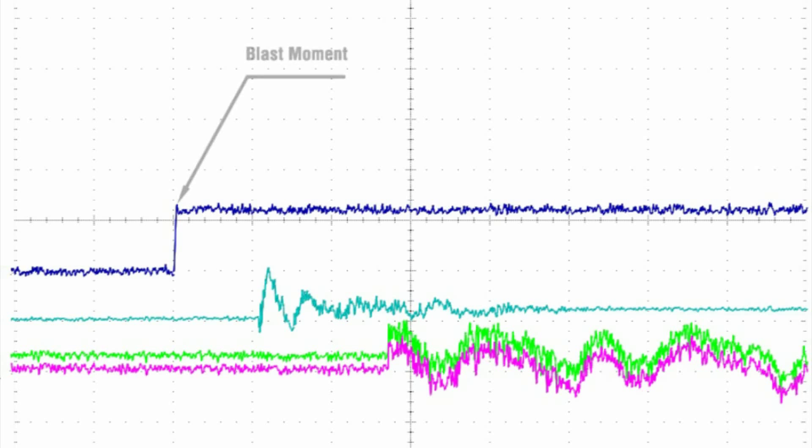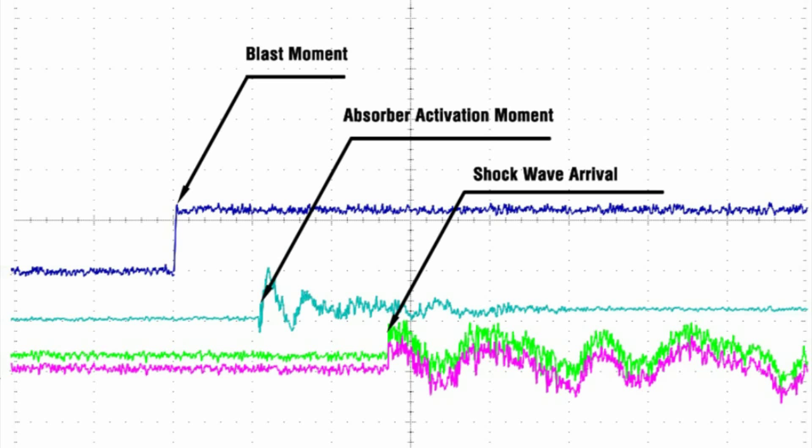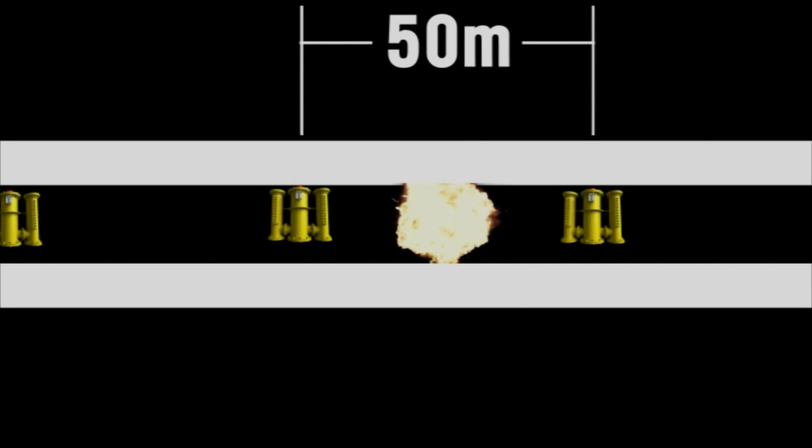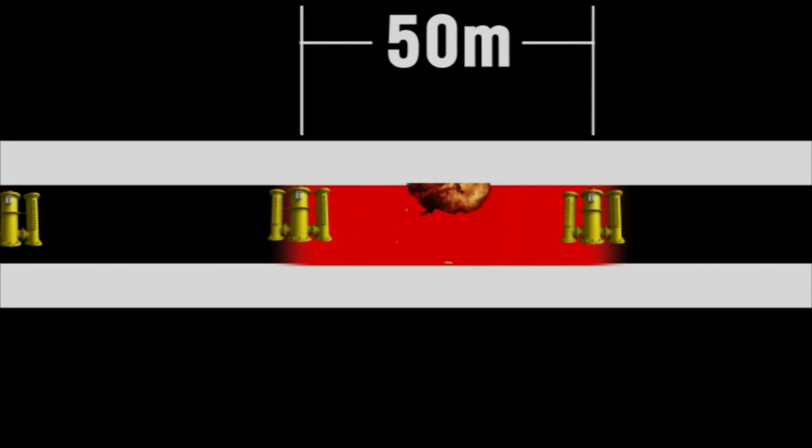In a protected tunnel, a blast wave cannot spread past the point where the blast absorbing barrier has been created by an absorber. People and equipment behind the protective barrier remain unharmed.